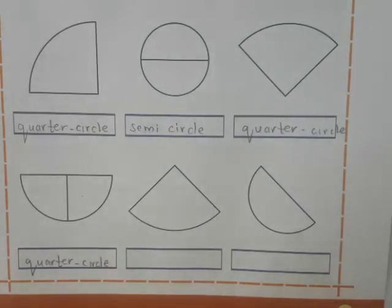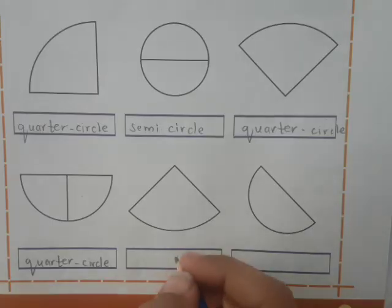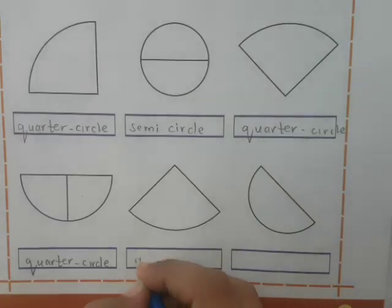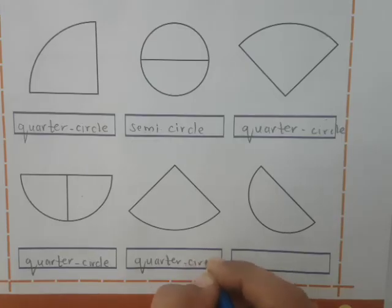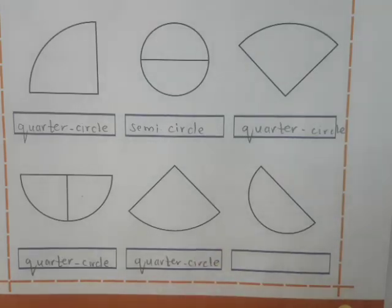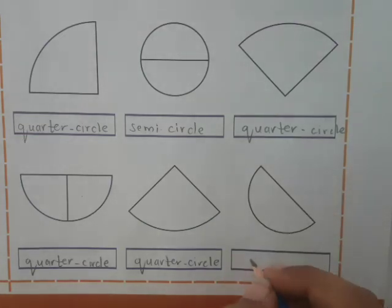What is the next one shape? It's also a quarter circle. And the last one shape is of semicircle.